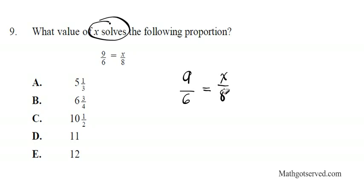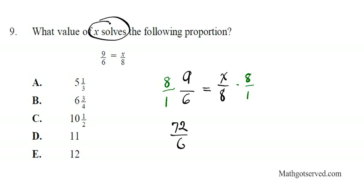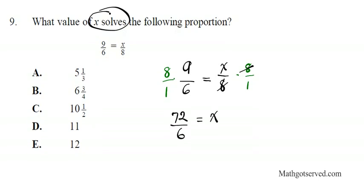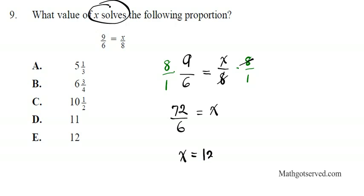Since x has been divided by 8, we undo that division by multiplying both sides by 8. On the right side the 8s cancel leaving x. On the left side we get 8 times 9 over 6, which is 72 over 6 = 12. So x equals 12. You can do this division with your calculator or by hand. The answer is option E.